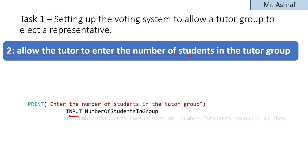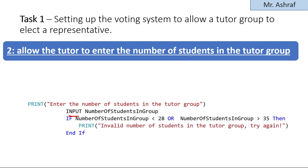To validate the input: the pre-release material states that the tutor group ranges between 28 and 35 students. If a number outside this range is entered — say 26 — it should be invalid. Use an IF condition: IF NumberOfStudentsInGroup < 28 OR NumberOfStudentsInGroup > 35, THEN PRINT "Invalid number of students in the tutor group, try again", ENDIF.